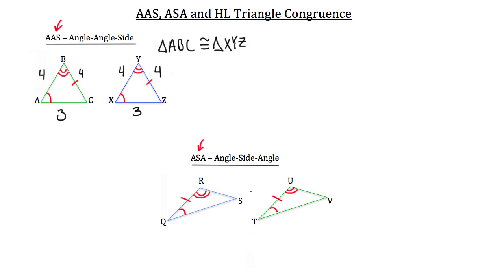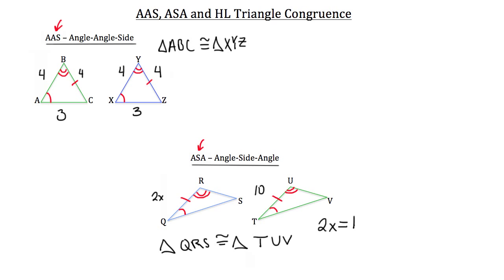You could solve a math problem like this: if triangle QRS is congruent to triangle TUV, and segment QR is 2X while segment TU is 10, you know those two parts are congruent, so you set them equal to each other. Since 2X equals 10, divide both sides by 2 to get X equals 5. Plugging that in, 2 times 5 equals 10 for segment QR, and that's congruent to segment TU, which is also 10.